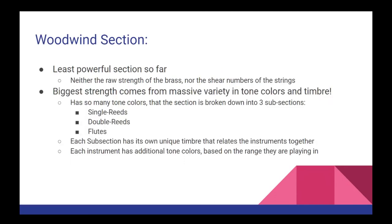The woodwind section is the least powerful section that we've covered so far. It has neither the raw strength of the brass nor the sheer number of the strings. However, it boasts more variety in tone colors and timbre than the strings and brass combined. The variety is so great, in fact, that the woodwinds are traditionally broken into three distinct subsections just in order to make orchestrating them more manageable. These subsections are each determined by the type of mouthpiece that each instrument uses.